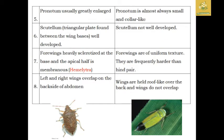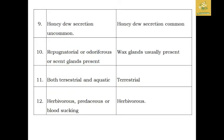In Heteroptera the pronotum is generally greatly enlarged, while in Homoptera it is always small and collar-like. The scutellum — a triangular plate between wing bases — is well developed in Heteroptera but not in Homoptera. The forewing in Heteroptera is hardened at the base and membranous at the distal half (hemilytra), while in Homoptera forewings are of uniform texture, frequently harder than hind wings. In Heteroptera left and right wings overlap on the abdomen; in Homoptera wings are held roof-like and do not overlap.